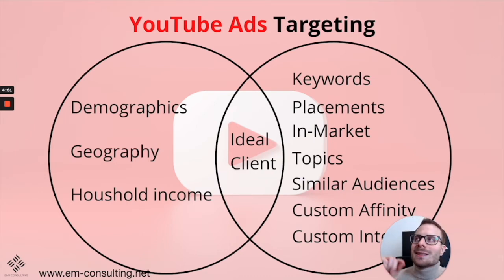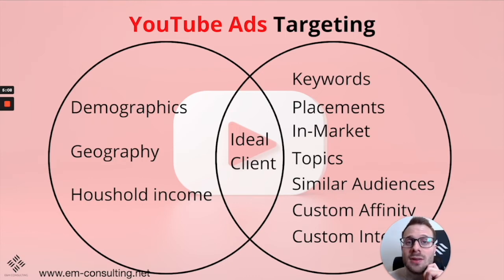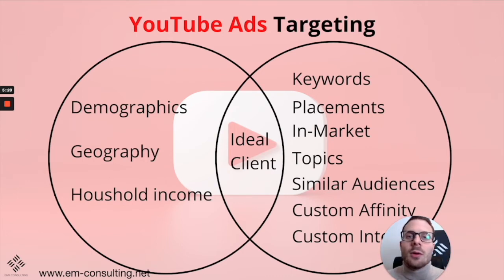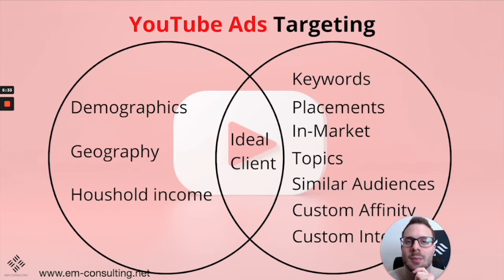You can also target placements. Placements are videos — your ads will show up in front of those videos. This might be videos from your competitors. If they have a YouTube channel, you can target those channels. If you already have your own YouTube channel with an existing audience, YouTube advertising is basically a no-brainer — you'll likely book appointments for around $30 if done correctly. You can place your ads in front of your own channel, retarget your own channel, and test different competitor YouTube channels to see which performs best.